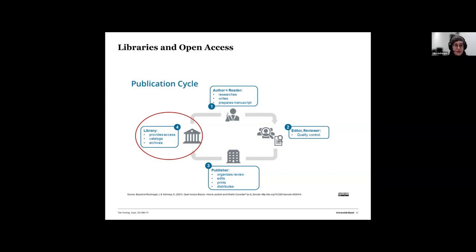It's still mostly common that we as libraries pay to buy or license electronic materials so that you as researchers can have access. But by getting active in open access, we try to change the conditions under which accessibility is given.